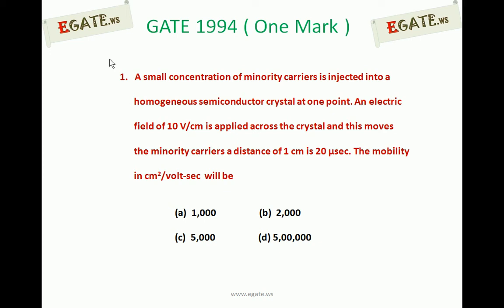A small concentration of minority carriers is injected into a homogeneous semiconductor crystal at one point. An electric field of 10 volt per centimeter is applied across the crystal and this moves the minority carriers a distance of 1 centimeter in 20 microseconds. The mobility in centimeter square per volt second will be: